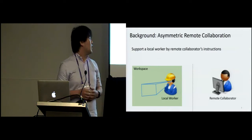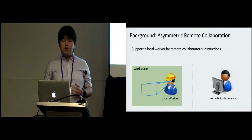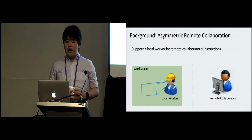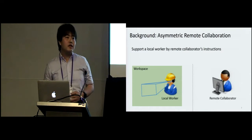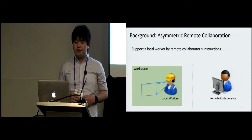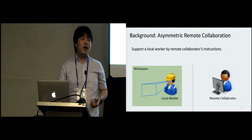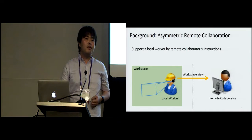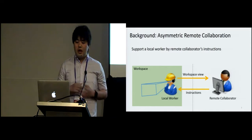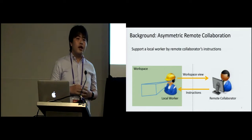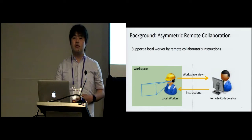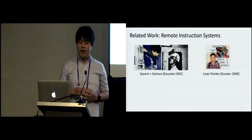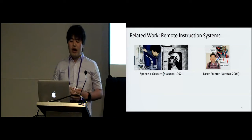In this study, we focus on asymmetric remote collaboration. This form of remote collaboration has two different roles of users. This framework is able to support local workers by remote collaborator's instructions. A system captures a workspace and sends it to the remote collaborator, who then gives some instructions to the local worker. This kind of system is designed for seamlessly connecting between users. This remote collaboration framework is an important topic in HCI, and it goes back to the early 90s.